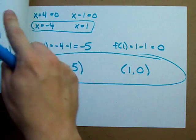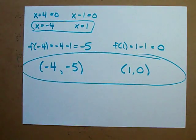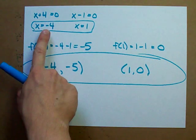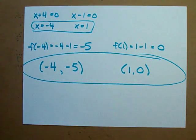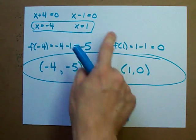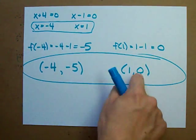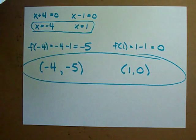Plug each of those into your original equation. It could have been either of these. Didn't matter. And when x was negative 4, you get negative 5. That's a coordinate. When x is 1, y is 0. That's a coordinate.